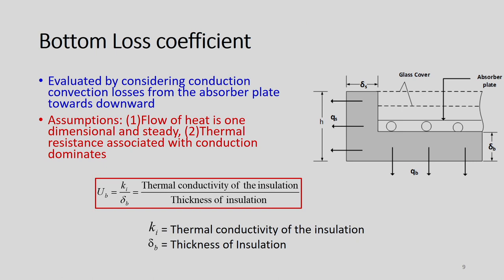The bottom loss coefficient is evaluated by considering conduction and convection losses from the absorber plate downward. The assumption is that the conduction resistance dominates, so the convective part is neglected. If we know the insulation thickness delta_B and the thermal conductivity Ki, then UB equals Ki divided by delta_B. If these two parameters are known, we can directly calculate UB.